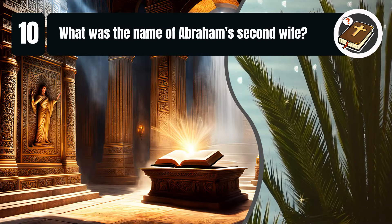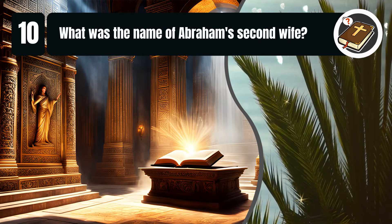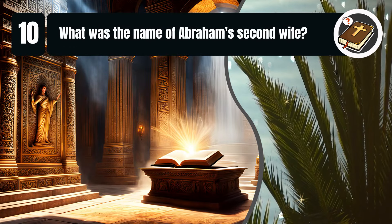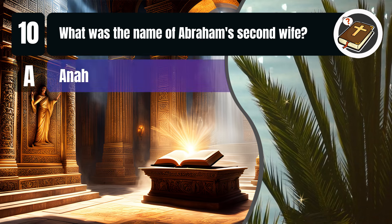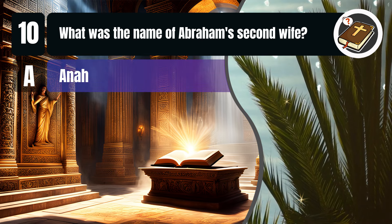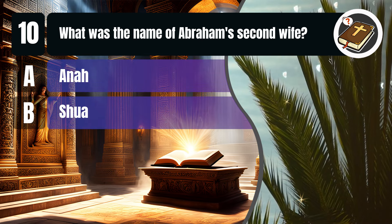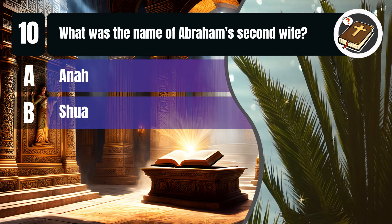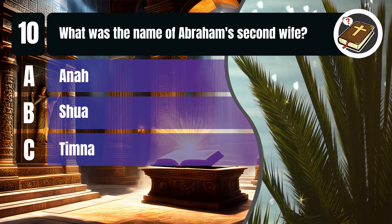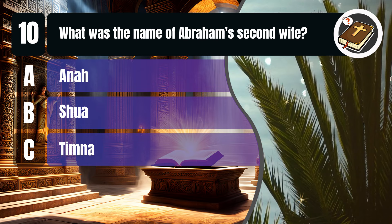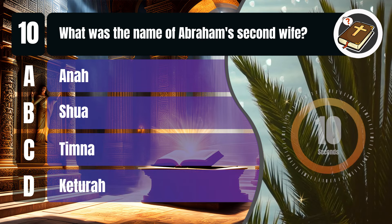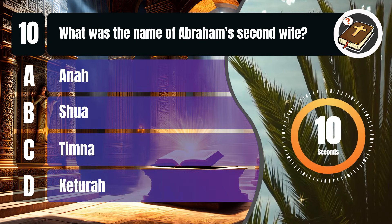Question 10. What was the name of Abraham's second wife? A. Ana. B. Shua. C. Timna. D. Keturah. You get 10 seconds.